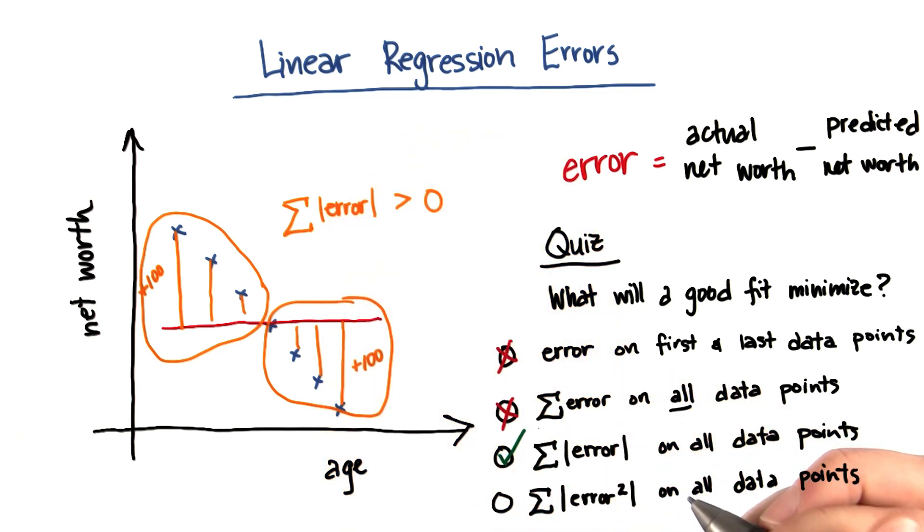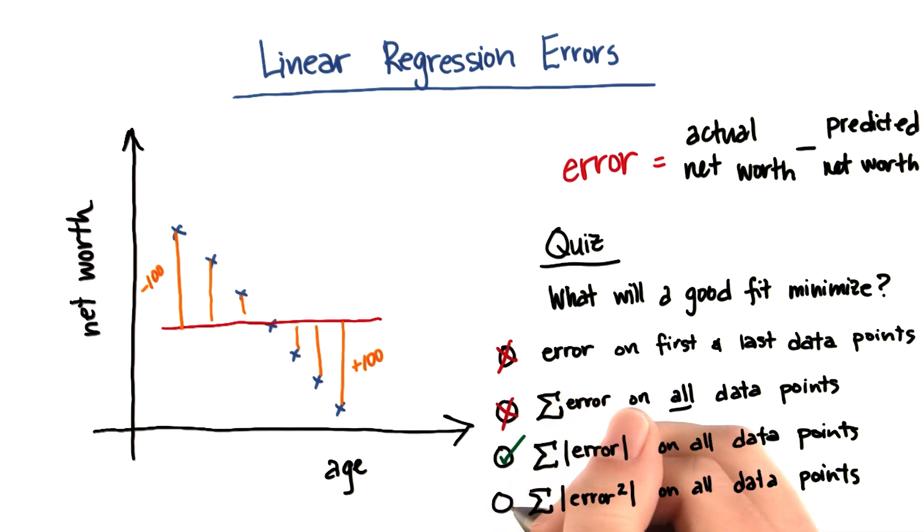And the last thing that will work, and that we'll explore in more detail, this is actually how linear regressions are calculated, is by minimizing the sum of the squared error on all the data points.